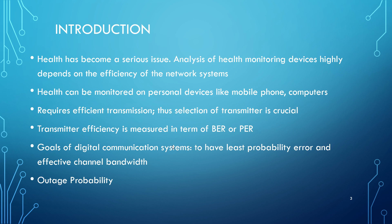Introduction: Health has become a very serious issue. Analysis of health monitoring devices highly depends on the efficiency of the network systems. Health monitoring can be made very convenient to a patient by monitoring their health on personal devices like mobile phones or desktops. Efficient transmission of these devices is very crucial, hence the selection of the most efficient transmitter is important. Transmitter efficiency or quality is measured in terms of bit error rate or packet error rate. The goal of a digital communication system design is to have the least possible probability of error and achieve the most effective channel bandwidth.